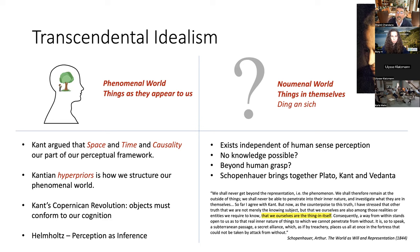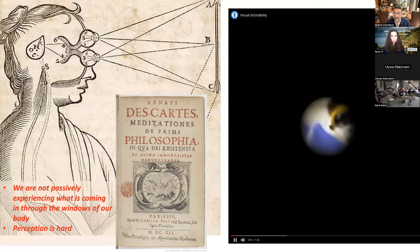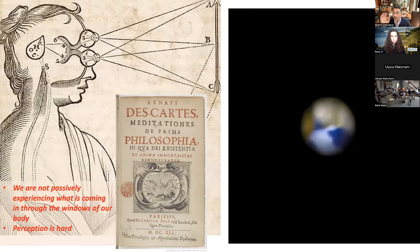This is really where the free energy principle and predictive processing start. When we look out from our eyes, unlike what Descartes might have held, we are not just passively experiencing what's coming through our eyes. Perception is kind of hard. If you look at this video, what you see is roughly speaking what we might see inaccurately if you could actually see what's coming through your eyes.